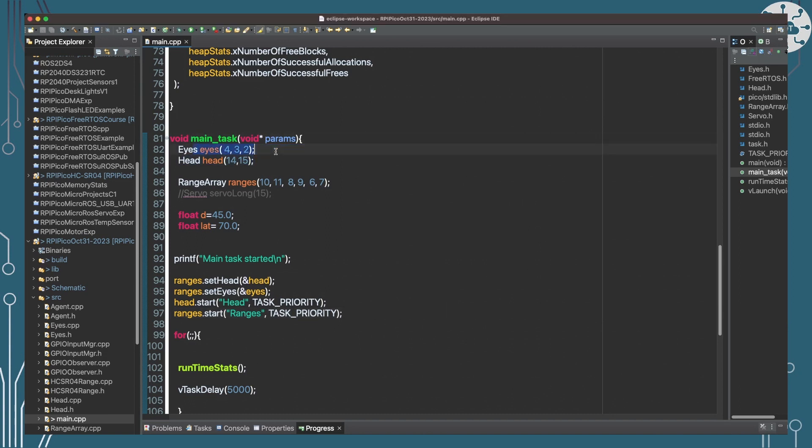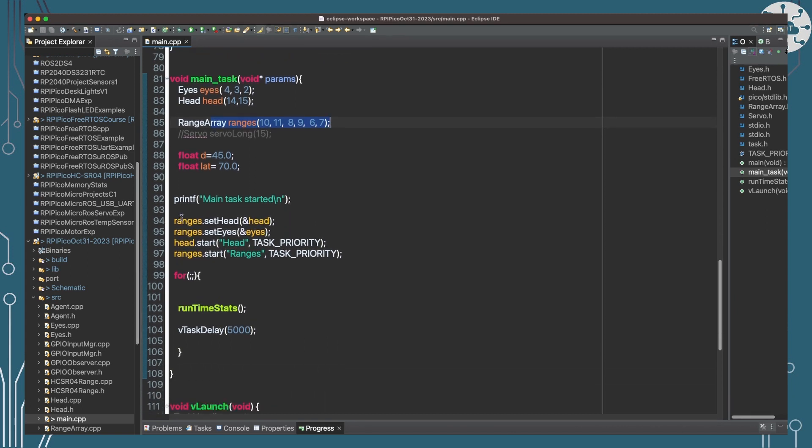And my main task is really setting that up. So, it's going to set up the eyes. Tells the eyes what GPIO pads they're using. Sets up the head. Tells the head what GPIO pads it's using to control the servos. And sets up the range sensors telling it which GPIO pads we're using for the three range sensors. And then really we're going to tell the range sensor because that's really going to manage the whole thing. Where the sensor is detecting motion or someone getting close, that's what's actually driving behaviour. So, it is that range sensor that is actually going to be telling the head what to do and telling the eyes what to do. So, we need to tell the range sensors where the head and eyes are. And then we can start up the head and range tasks. That's it in the main program.